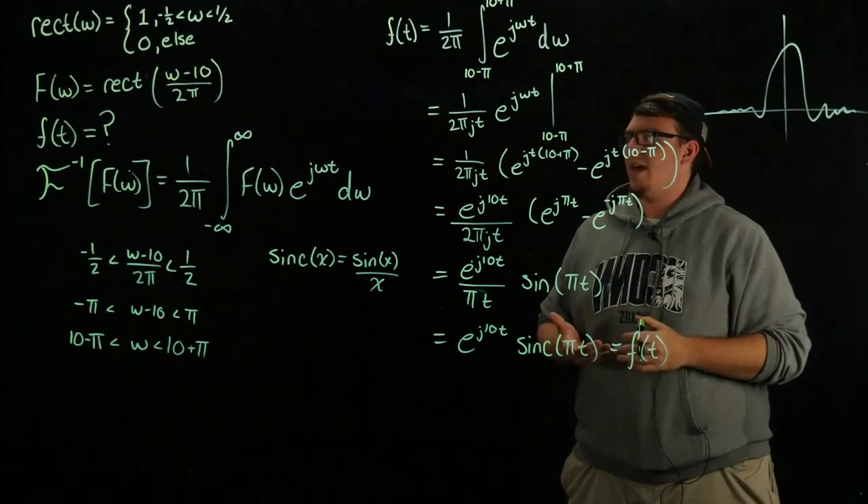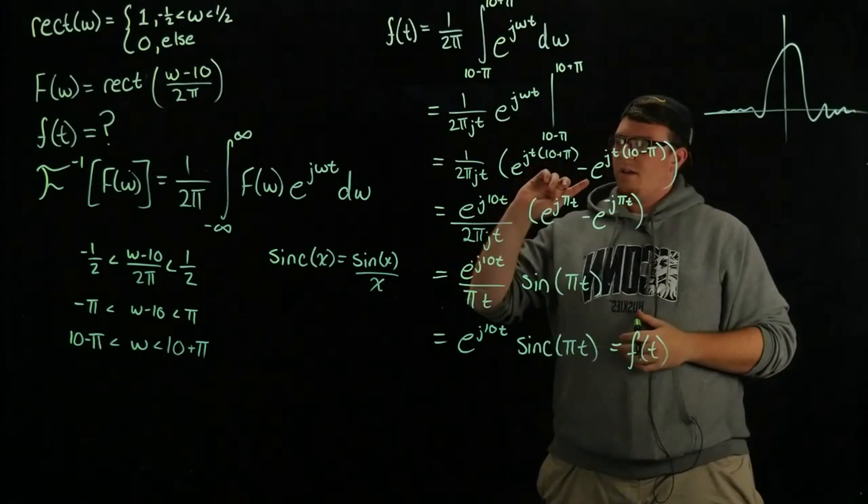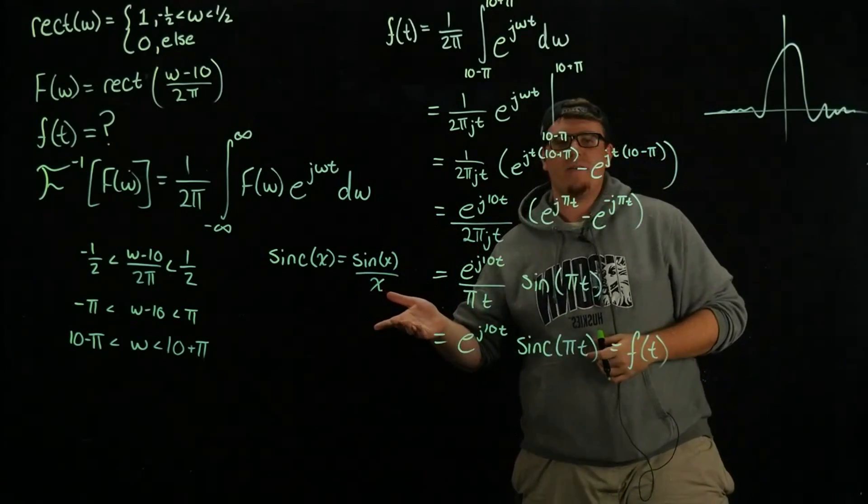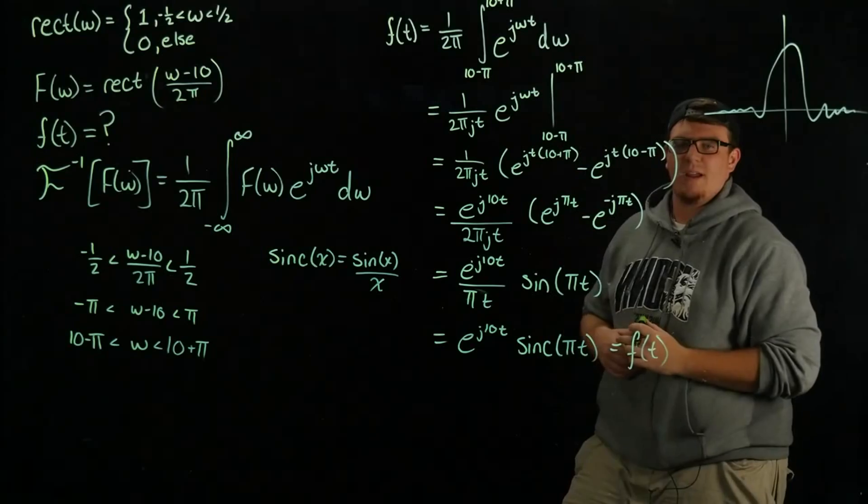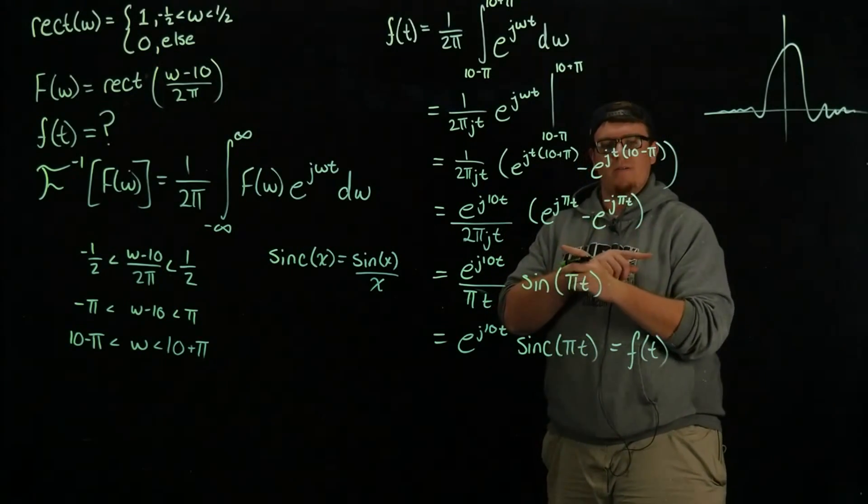Also this e to the j 10 t here probably has some oscillations to it. But it is known that the inverse Fourier transform of a boxcar function is a sinc function, so it was very nice that we ended up with that.